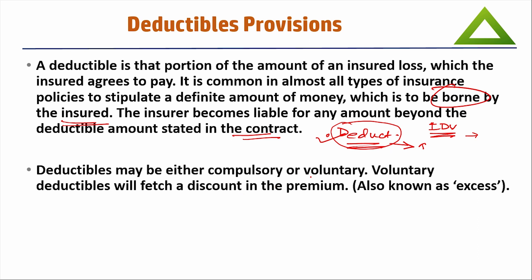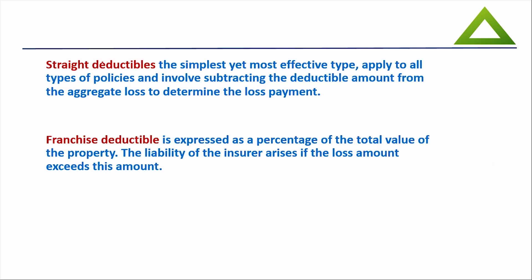Deductible may be either compulsory or voluntary. Voluntary deductibles will fetch a discount in premium, also known as excess. The straight deductible is the simplest yet most effective type, applied to all types of policies, and involves subtracting the deductible amount from the aggregate loss to determine the loss payment. We have got an example also coming up.